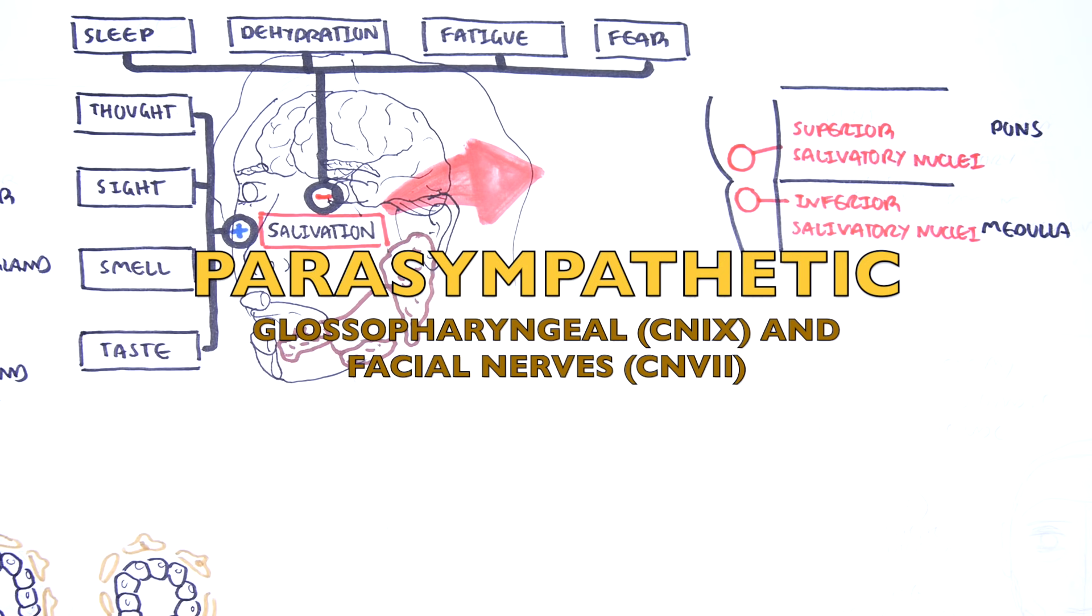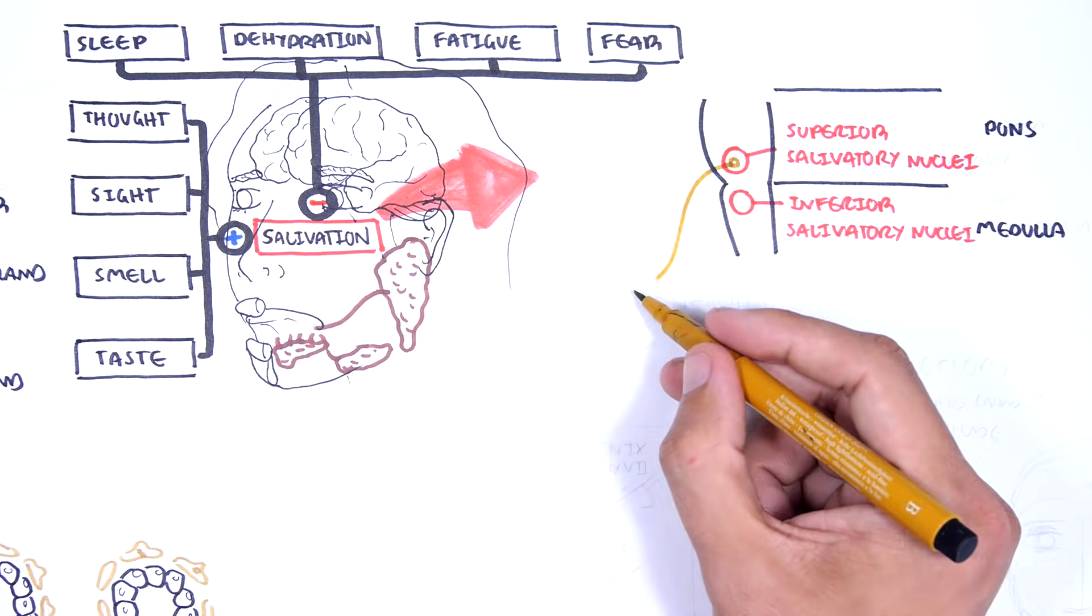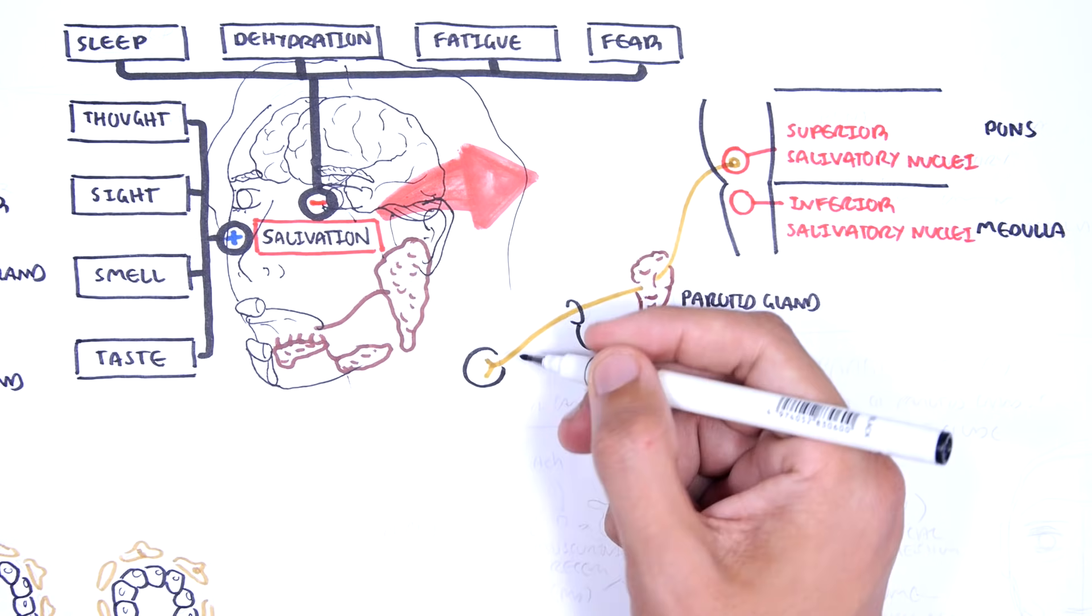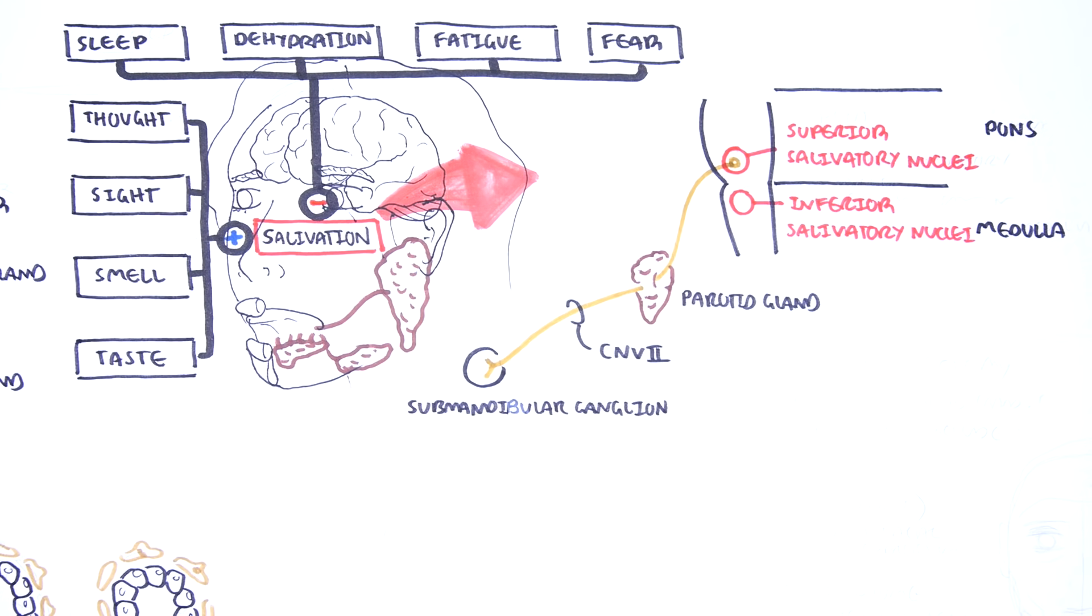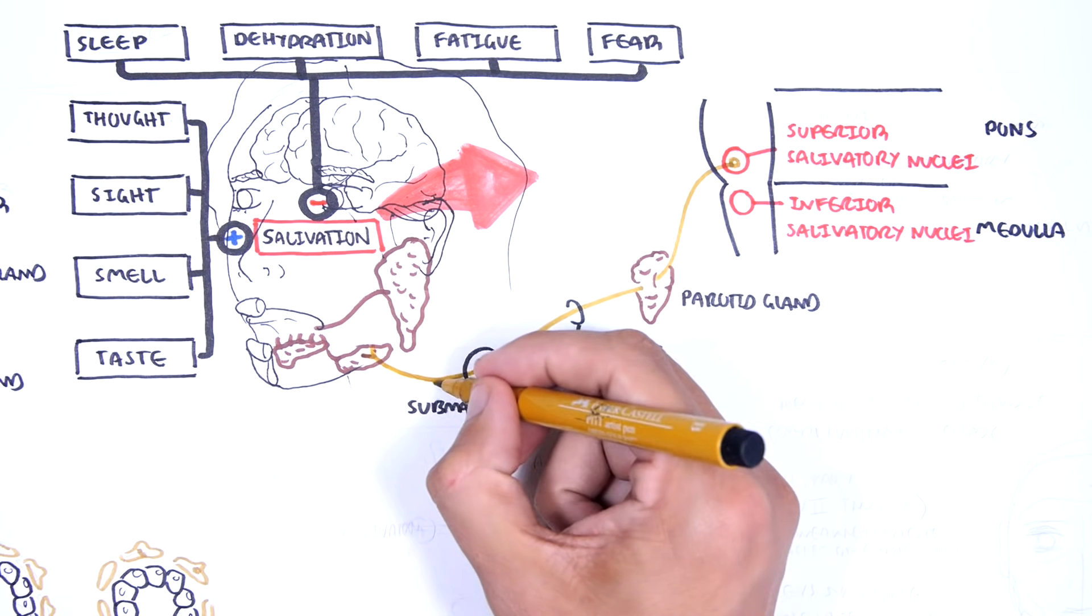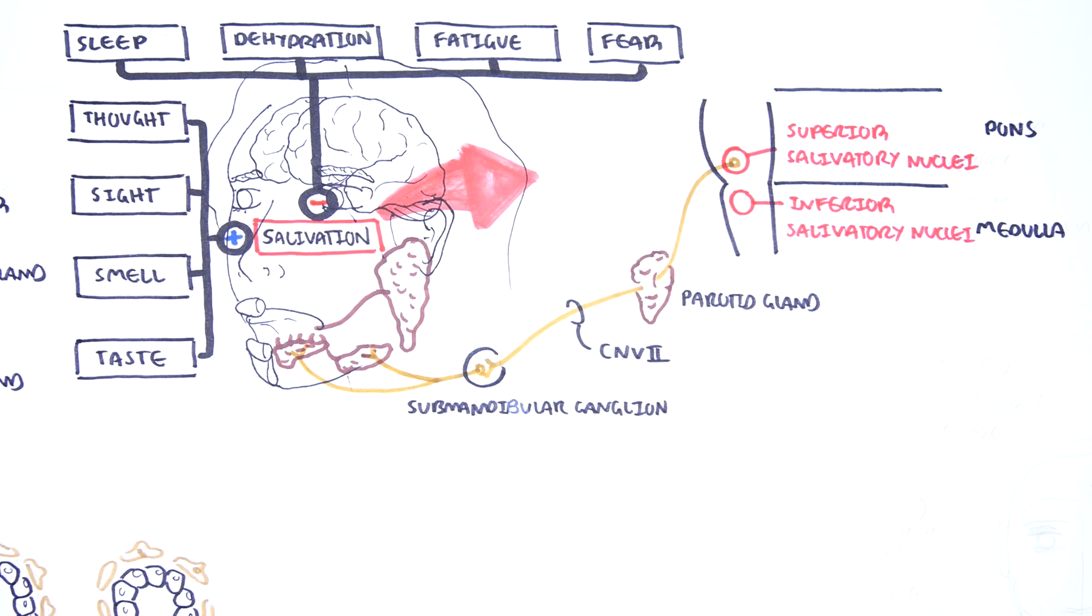Originating from the salivary nucleus in the pons, you have the facial nerve passing through the parotid gland and synapsing with a second neuron at the submandibular ganglion. This second neuron will supply the sublingual and submandibular gland, increasing parasympathetic tone and causing salivation.